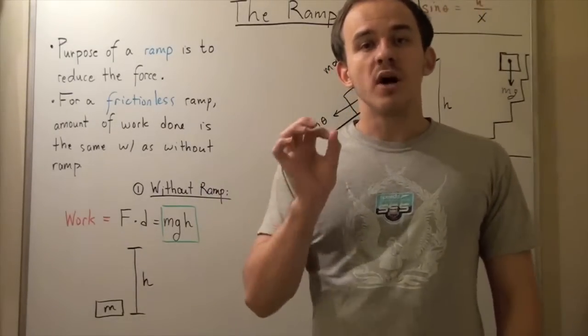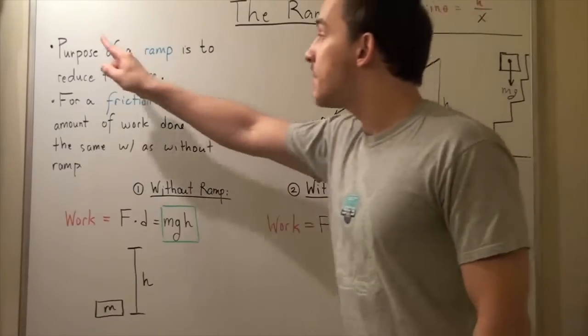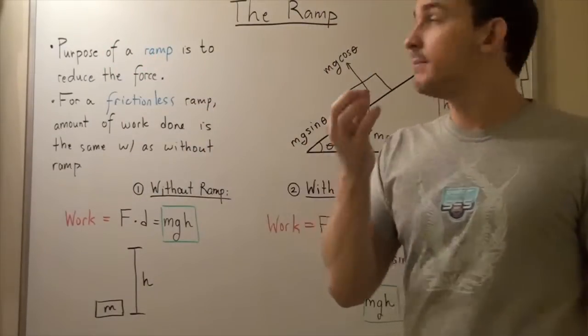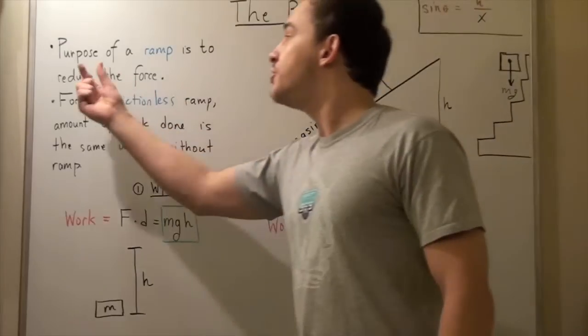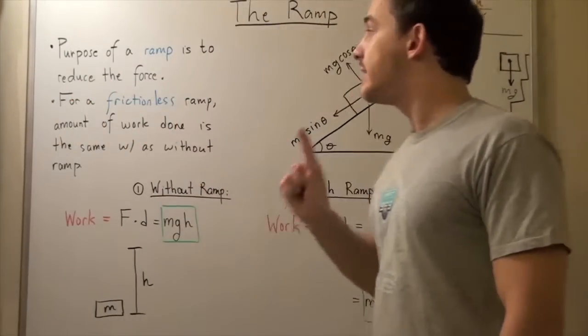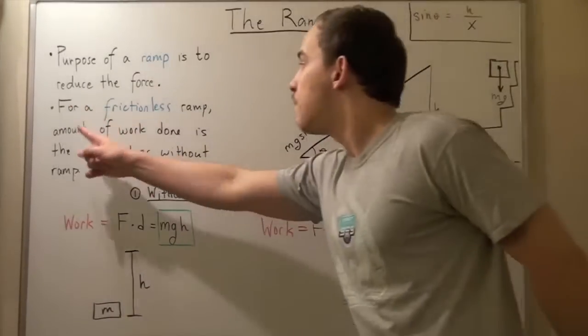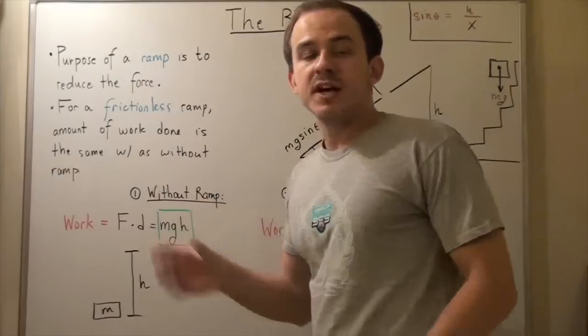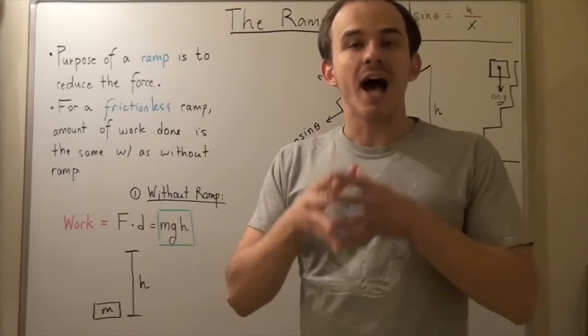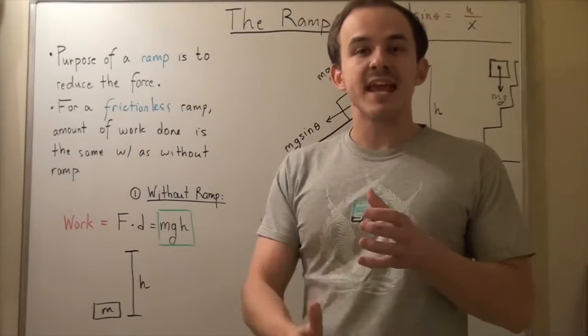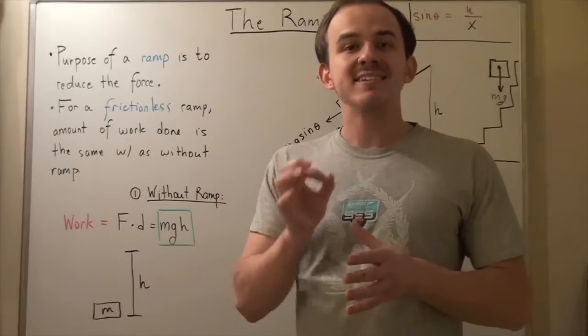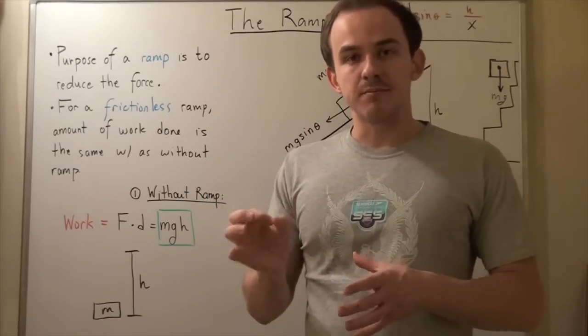So that's exactly what a ramp does. The purpose of a ramp or an inclined plane is to reduce the force. And notice the following: For a frictionless ramp, the amount of work that is done in moving a distance h vertically upward is the same with or without the ramp.